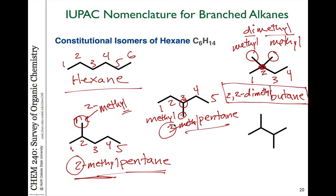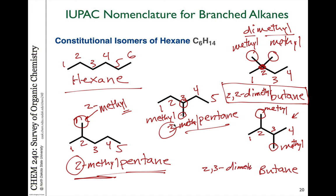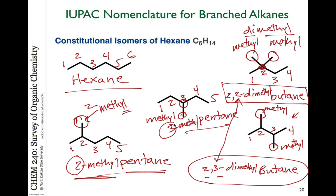The last constitutional isomer also has butane as the longest chain. We have a substituent on the two carbon and a substituent on the three carbon — this is a methyl group and this is a methyl group. Again we have two different methyl groups, so we use the prefix dimethyl. Now they're not on the same carbon in this example, so the whole name for this molecule is 2,3-dimethylbutane. The thing that distinguishes this name from the previous isomer is that the positions of the methyl groups are different, but each is a unique name that identifies that unique isomer for C6H14.